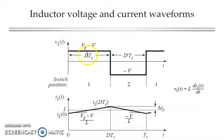When the switch is on, the duty cycle D, the inductor voltage is Vg minus V and when the switch is off, it is D prime Ts, where VL equals minus V. During the on period, the inductor current builds up and during the off period, the inductor current drops down.